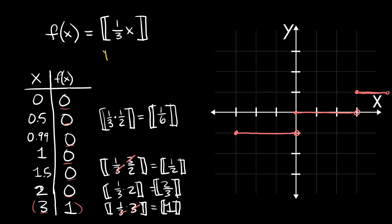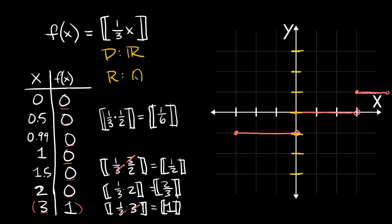Domain is all real numbers. Range: as we go up the y-axis, there's a step at every integer — so the range is all integers.